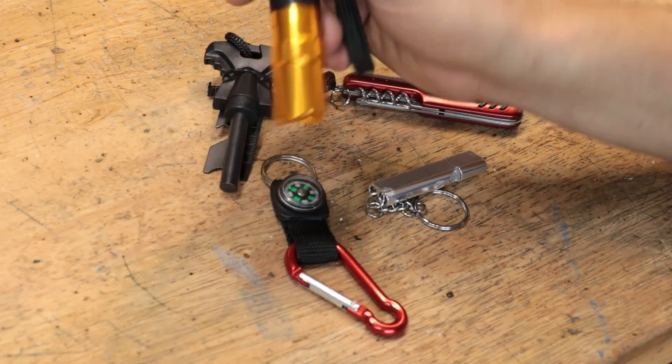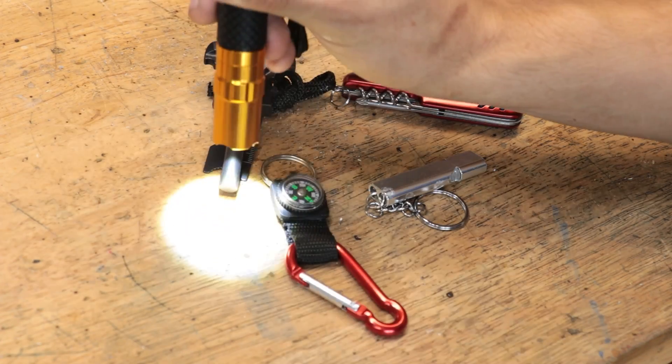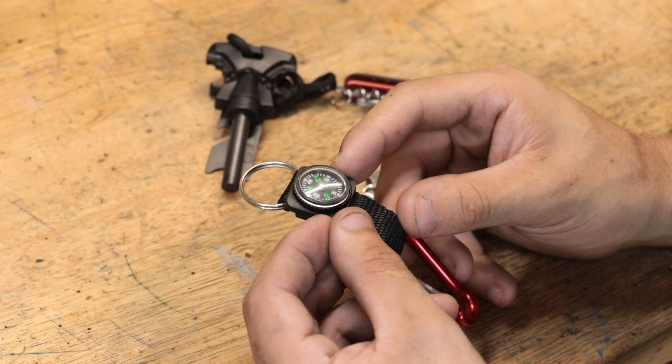It also comes with a torch, which is pretty useful and I'll keep it in the workshop. It also comes with a compass and whistle.